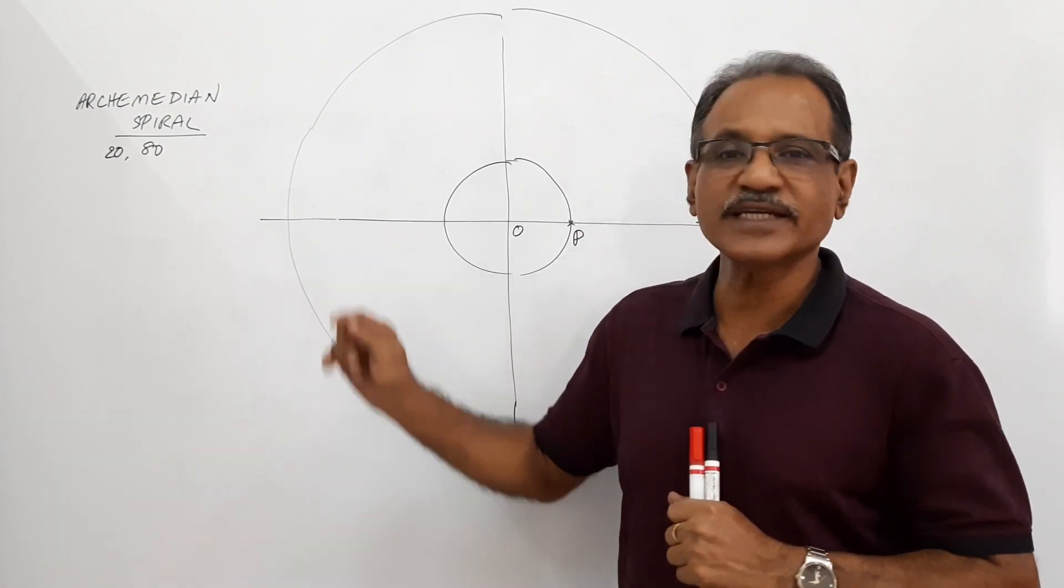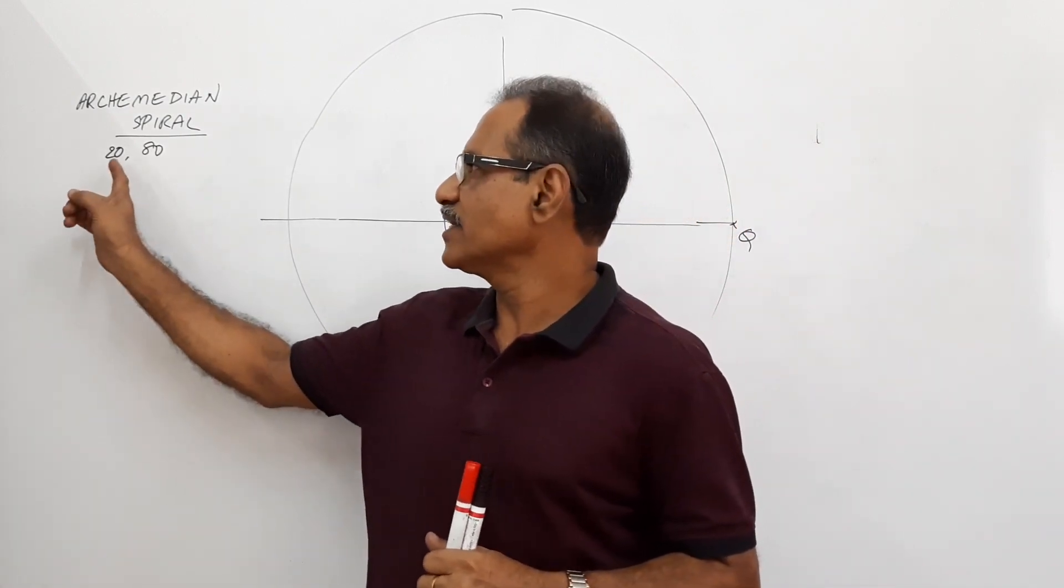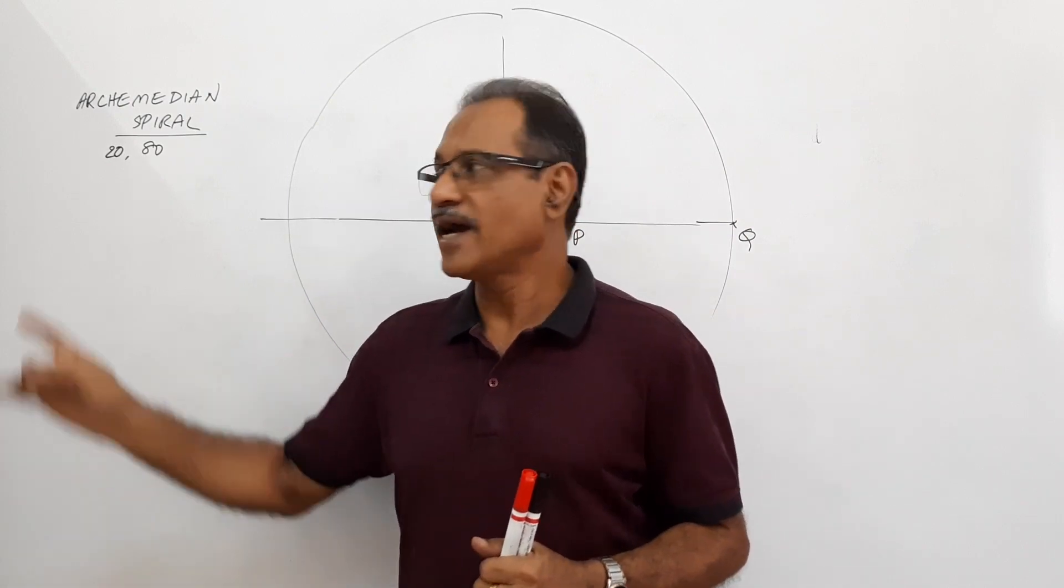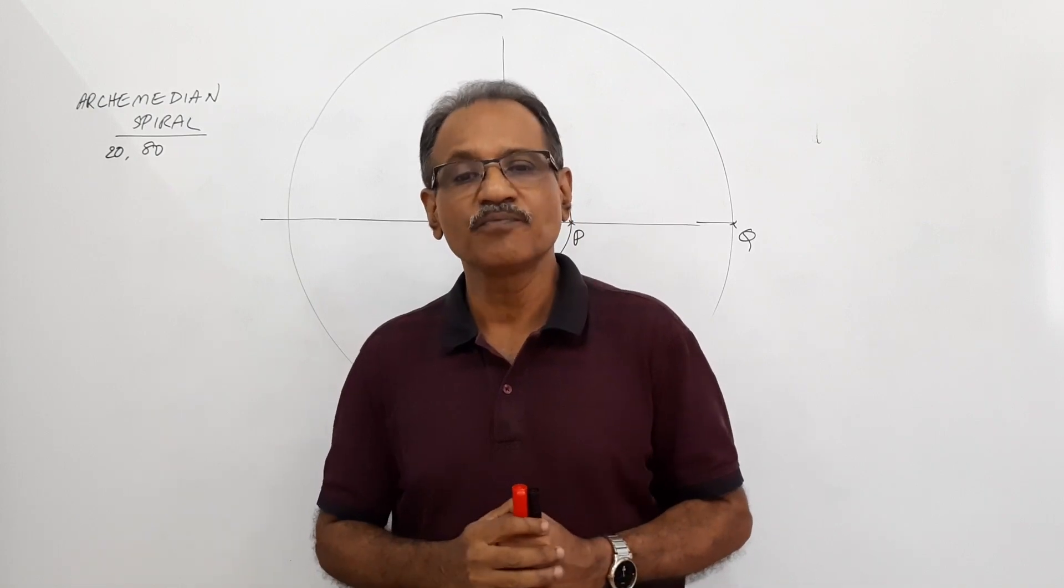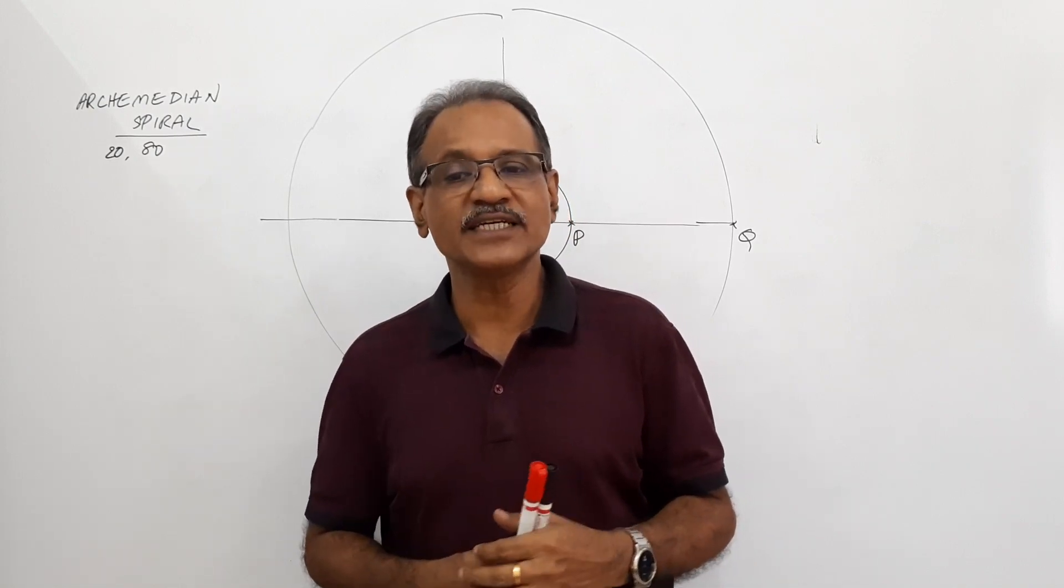The question is, construct an Archimedean spiral with initial radius 20 mm and final radius 80 mm, draw one convolution and also draw a normal and tangent at end point.